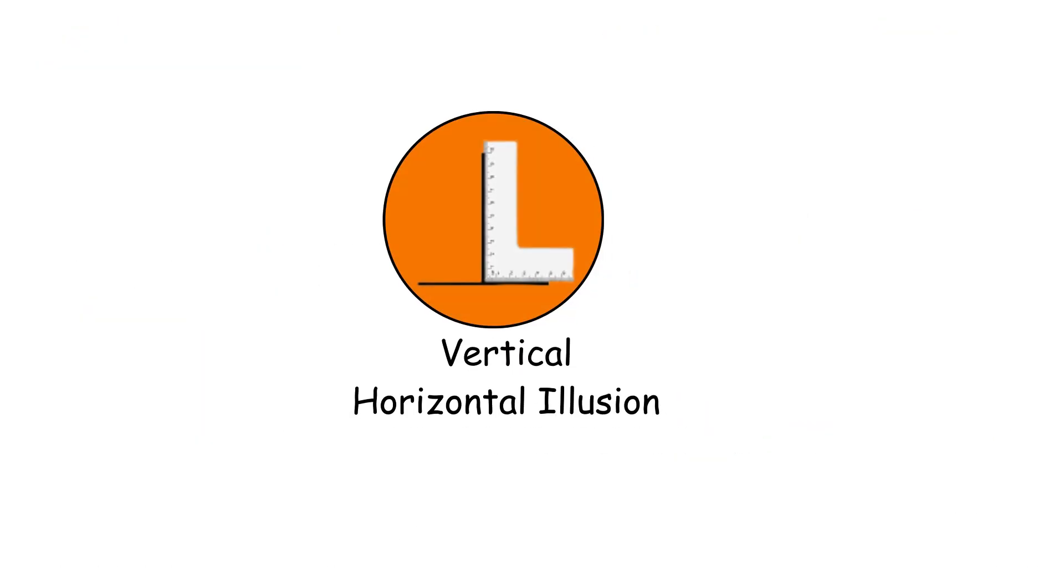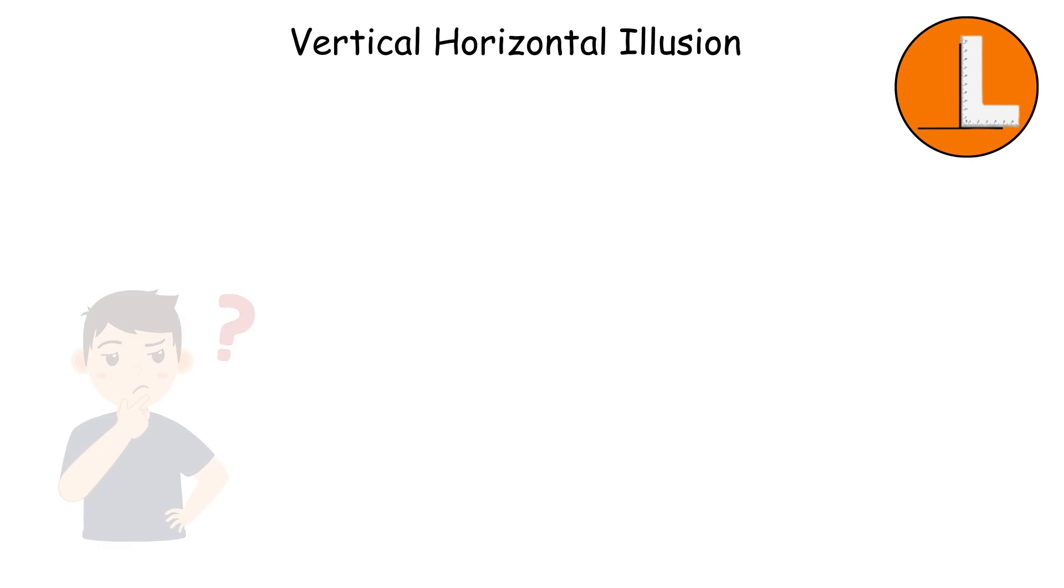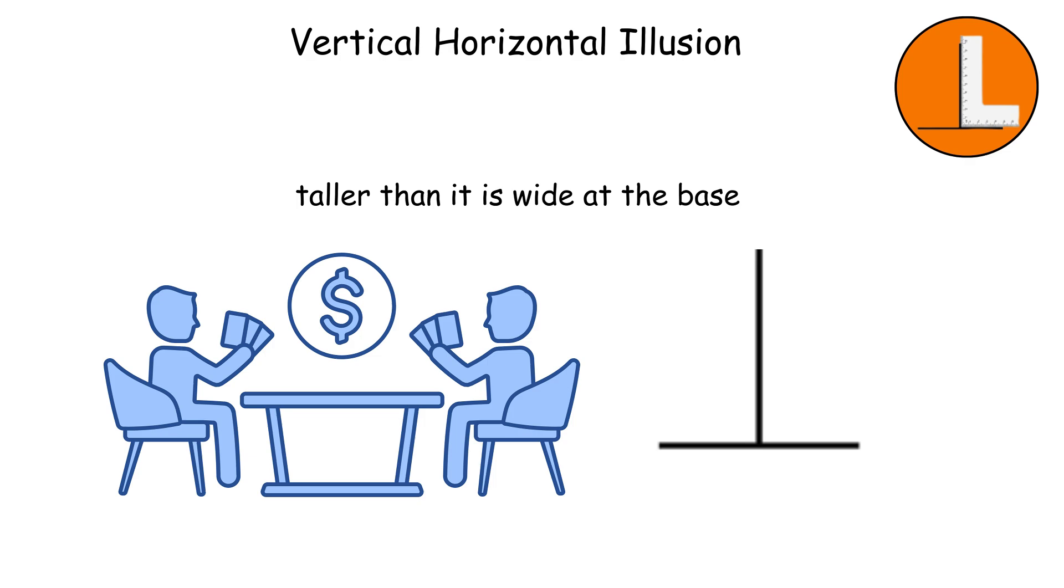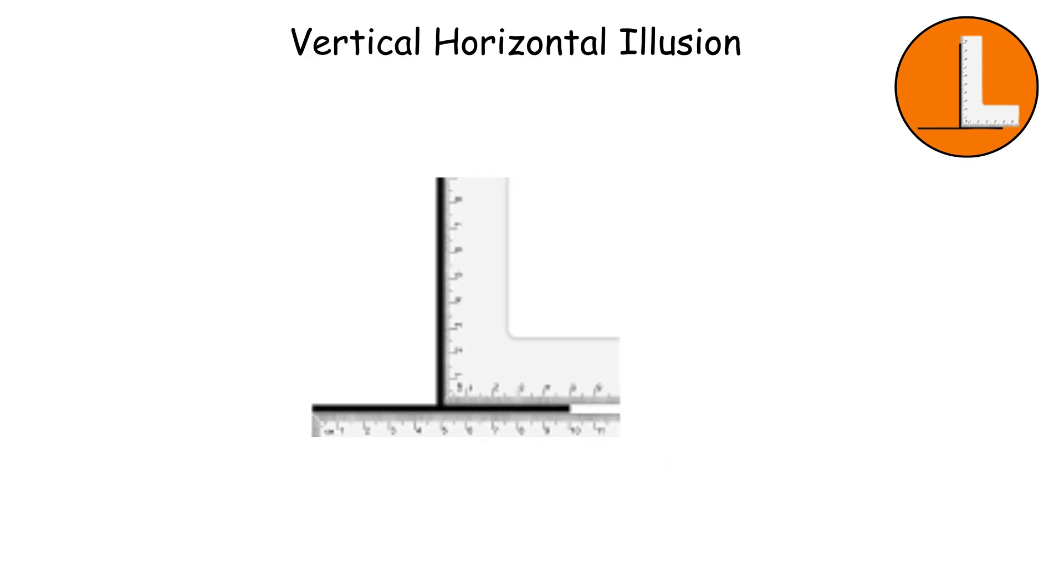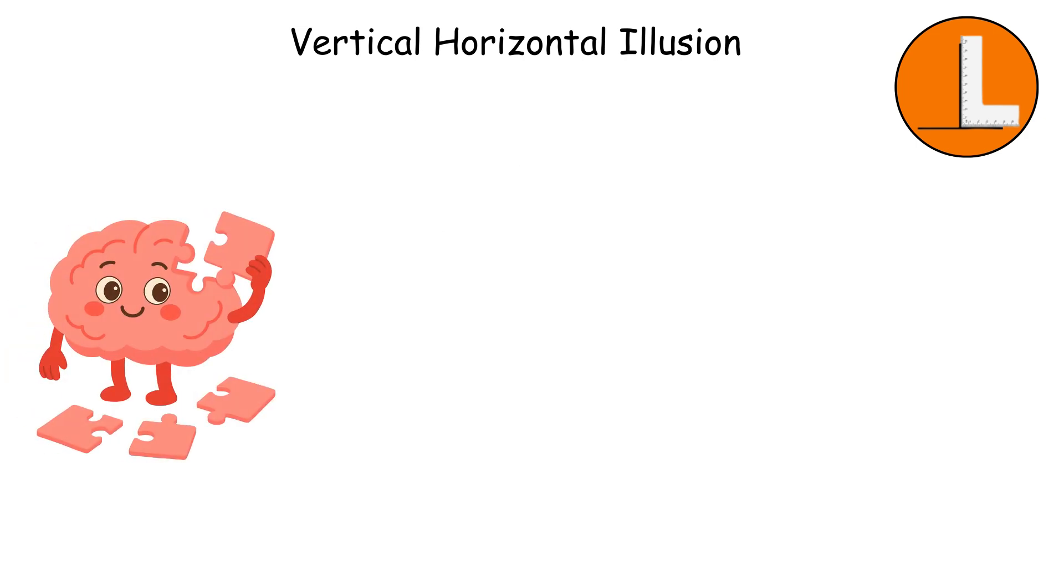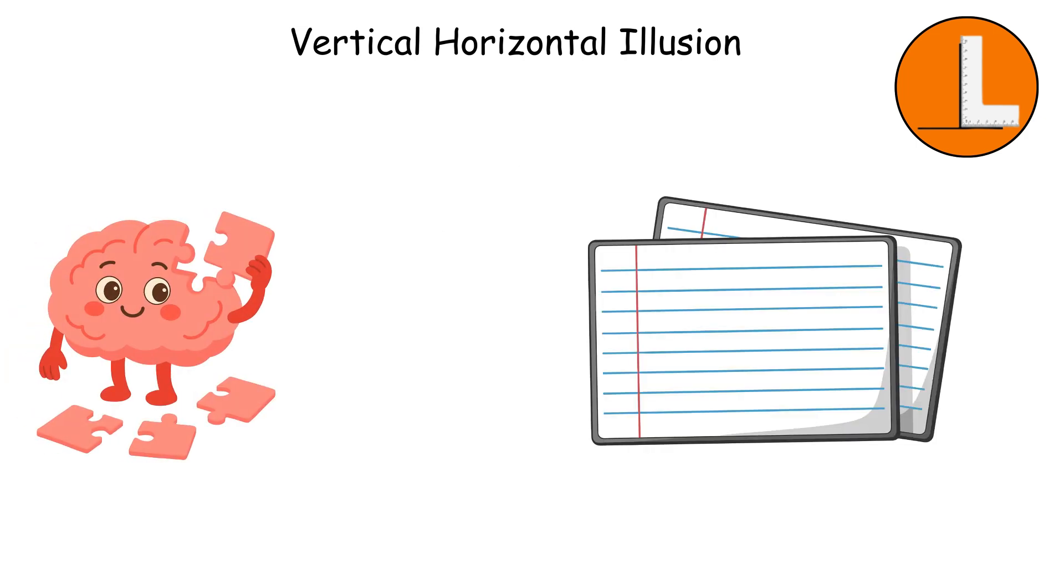The Vertical Horizontal Illusion. Let's say you're trying to guess if a flagpole is taller than it is wide at the base, and you'd bet money that it's way taller. But when you actually measure it, you discover the height and width are exactly the same. That's the Vertical Horizontal Illusion trolling you, and it happens because your brain has a weird bias against horizontal lines.